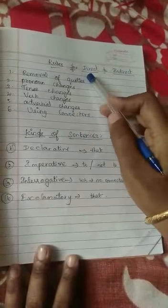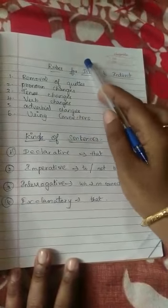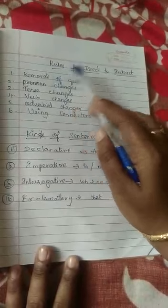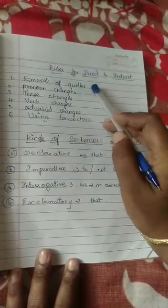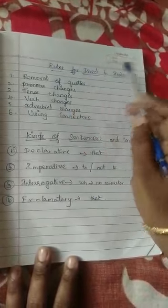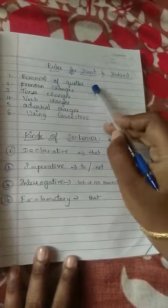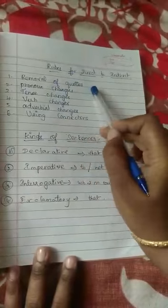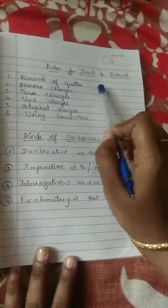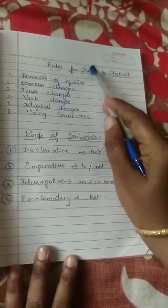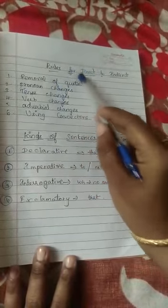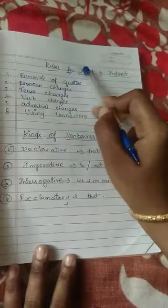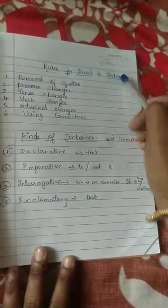What do you mean by removal of quotes? When it is a direct speech, as we saw previously, we have open quotes and closed quotes, and a comma will be there. That means reporting verb plus reporting speech. In between the reporting verb and speech, we will have punctuations. We have to remove that punctuation to change direct into indirect.